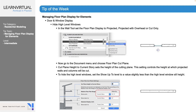The wall setting will also affect this. If you set the wall to projected, projected overhead, cut only, symbolic cut, outlines only, or overhead all, those also interact with the settings you set for your door and window.